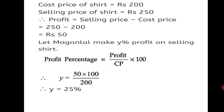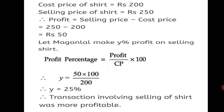Maginlal earned 25% profit on selling shirt, and 12% profit on selling trousers. So the transaction involving selling of shirt was more profitable. This way we have solved the sum based on profit percent — we found profit individually for trousers and shirt, then calculated the percentage using the formula, and compared which percentage was higher.